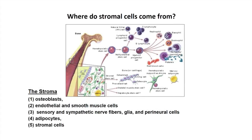Let's start with some very basic concepts of stromal cells. It's really important to understand where the cells come from. They obviously come from the bone marrow. They're a component of the bone marrow called the stroma. The stroma is actually everything that's non-hematopoietic, in terms of cell lineages.